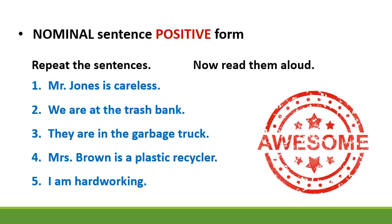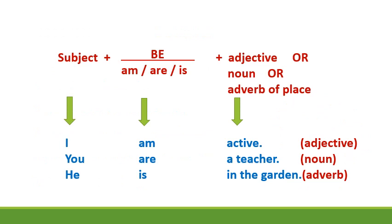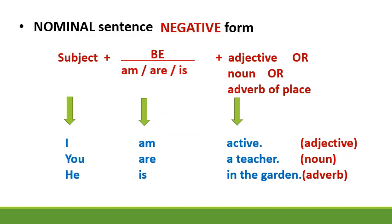Awesome. Nominal sentence negative form. You will see that the elements of the negative form are the same as the positive form, except we need to add the word 'not'. For example: I am not active. You are not a teacher. He is not in the garden. Easy.